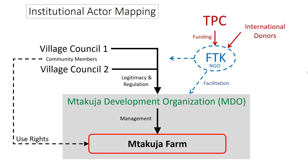In terms of institutional mapping, TPC — the sugarcane farm — and international donors remain on the outside of all of this, even though they have an overwhelming physical presence. FTK plays a facilitation role. The village council and community chairs then give legitimacy to the Kuja development organization, the MDO, which manages the farm. In turn, the community assembly gets use rights of the farm.